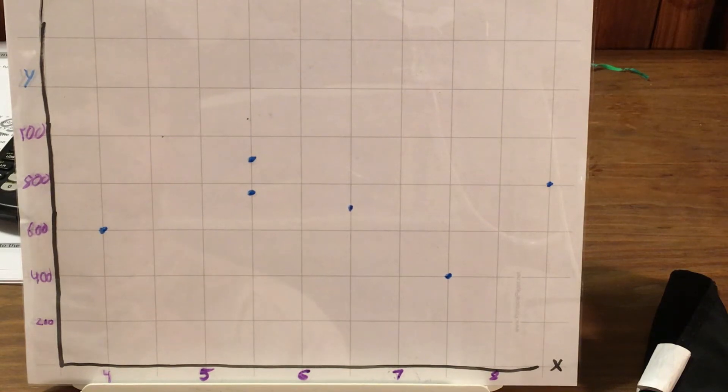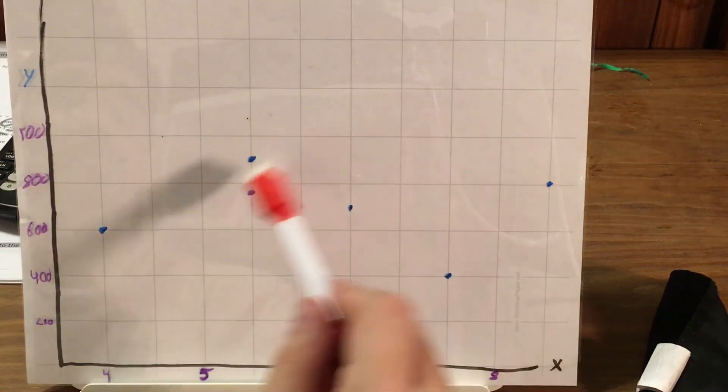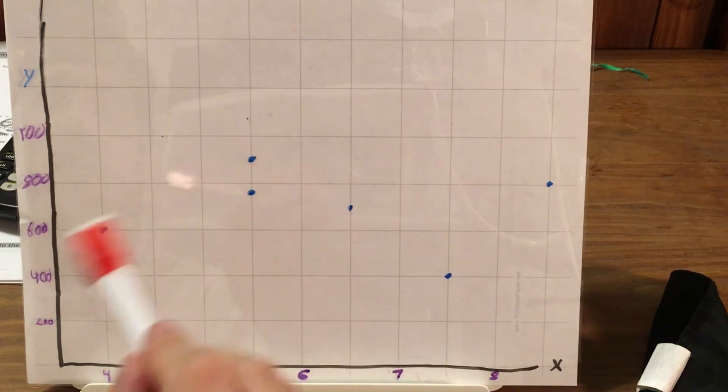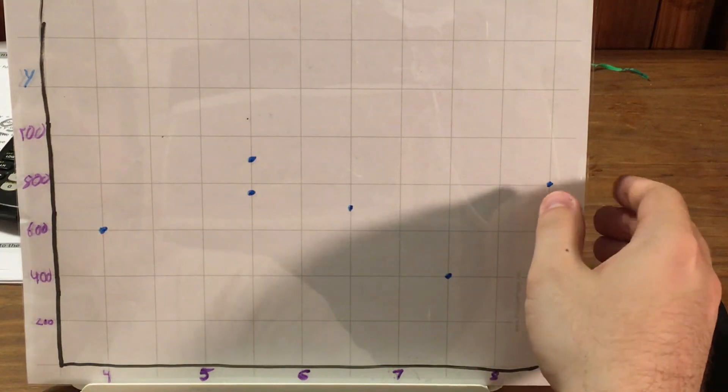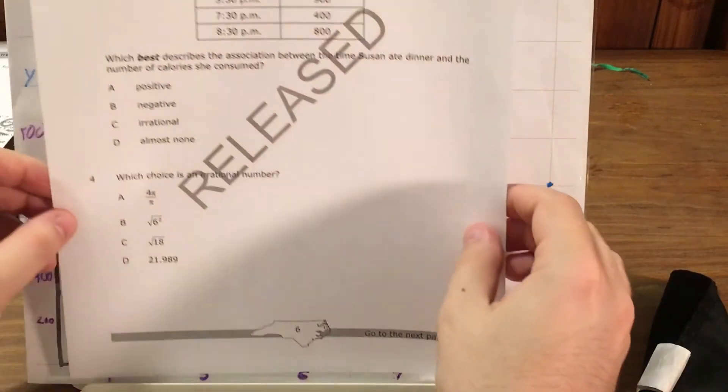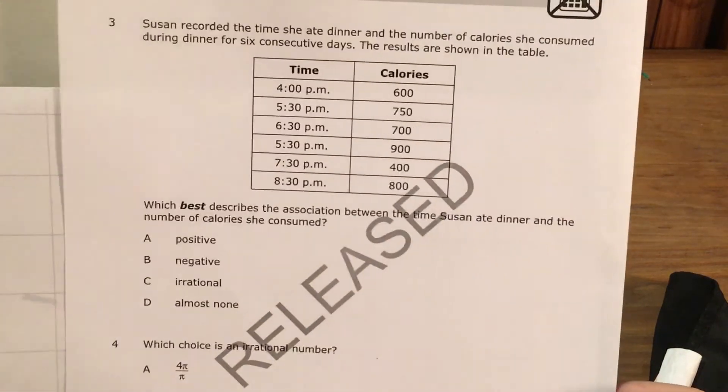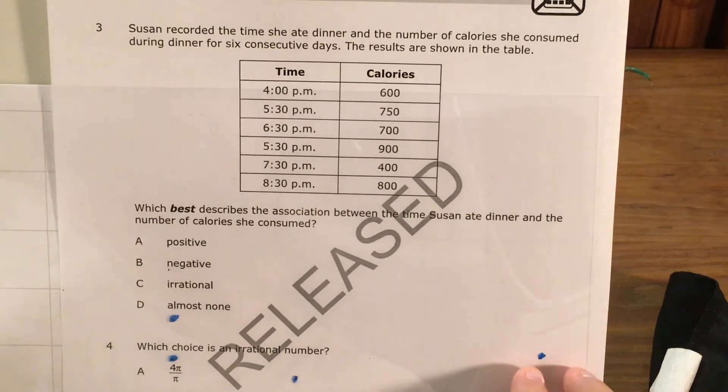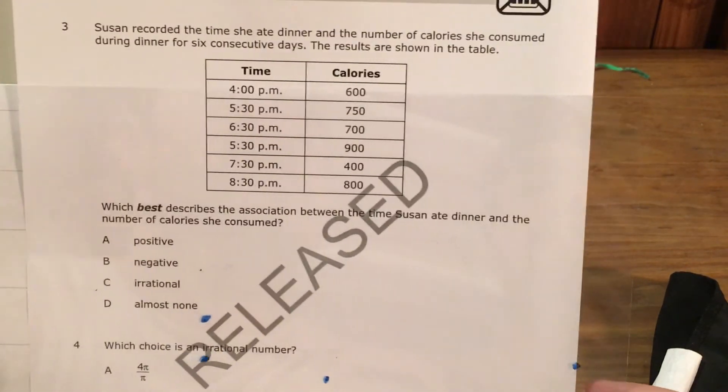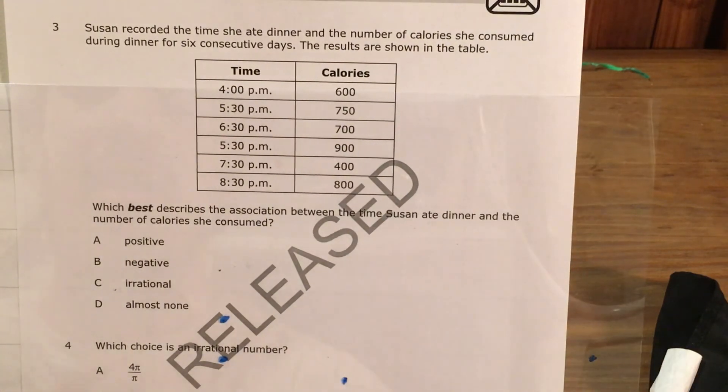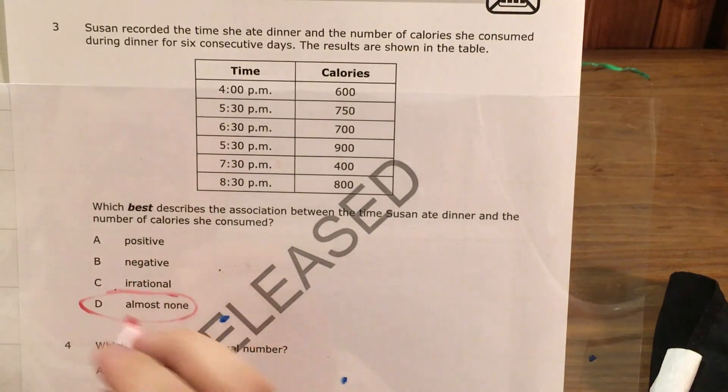Wait, never mind. They did six points, not seven. Sorry, that's my bad. That's on Mr. W. Because there's no clear line that I can make, I would say that this looks more like a cloud. And that if I'm going to bring back my answers, if it's a choice between positive, negative, irrational, and almost none, I'm going to go with almost none.